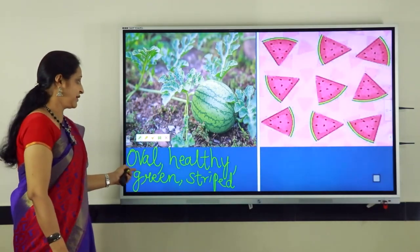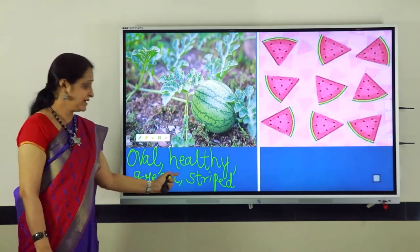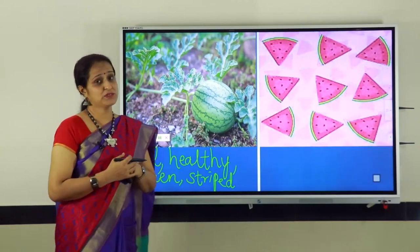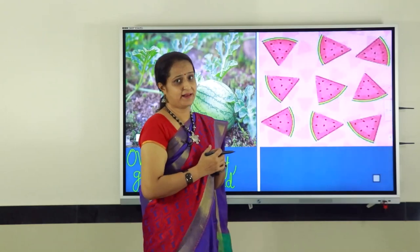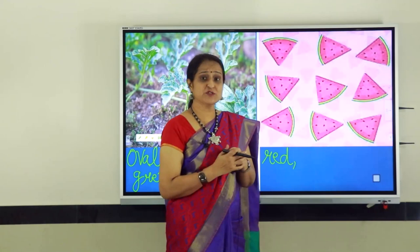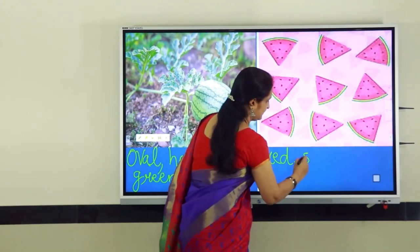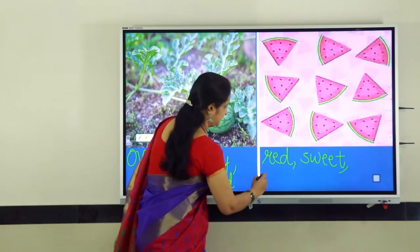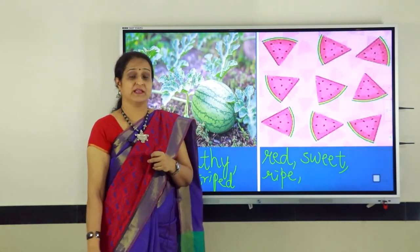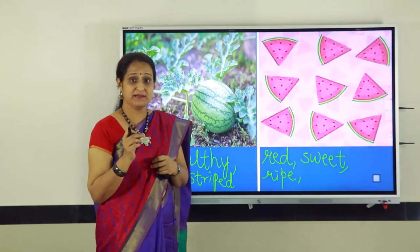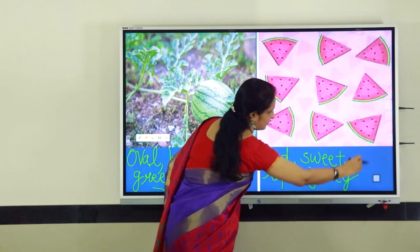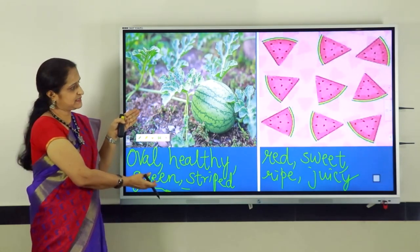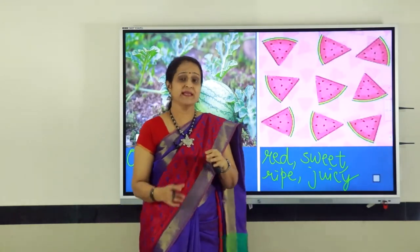So children, oval, healthy, green, striped — these are the describing words we have used for the noun watermelon. They tell us more about the watermelon you see in the picture. Now let us go to the right hand side where we see some slices of watermelon. What is the taste of the watermelon? It's sweet. Is it ripe? Yes, it's ripe. Is it juicy? Yes, the watermelon is juicy. When I looked at the whole watermelon, I got one set of describing words, but when the same watermelon is cut into slices, we get another set of describing words.